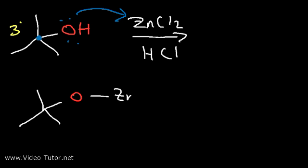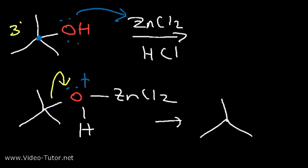So the oxygen is going to attach itself to the zinc chloride group. And whenever oxygen has three bonds, it will have a plus charge, which makes it a good leaving group. And so, this particular species will ionize, producing a tertiary carbocation. Now, this is the slow step, the formation of a carbocation intermediate.